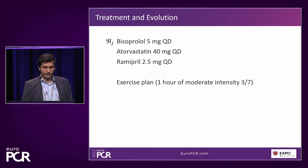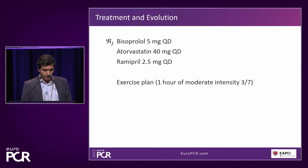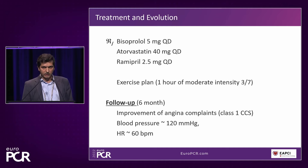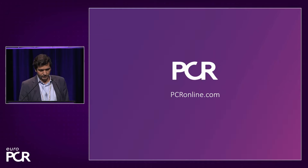The patient was started on bisoprolol, atorvastatin, and ramipril, and an exercise plan of one hour of moderate-intensity exercise three times a week was proposed. The patient was observed again six months later, and she improved in her angina complaints — now class one. Blood pressure and heart rate were normal.